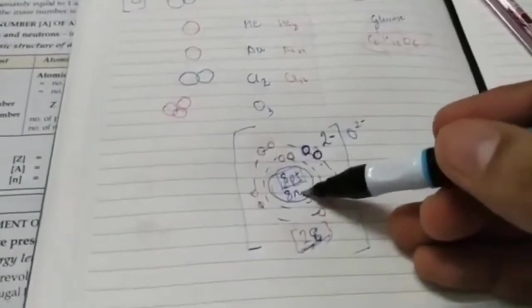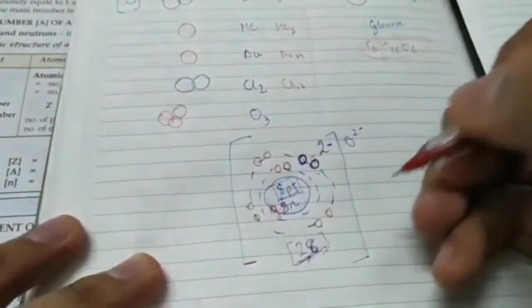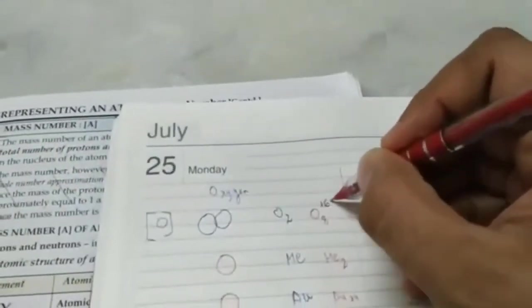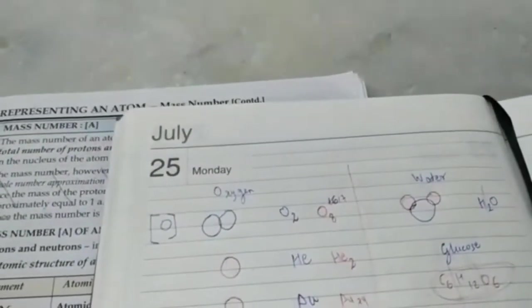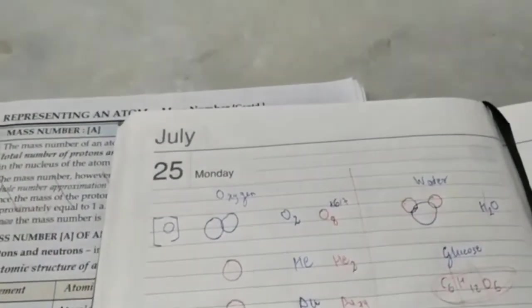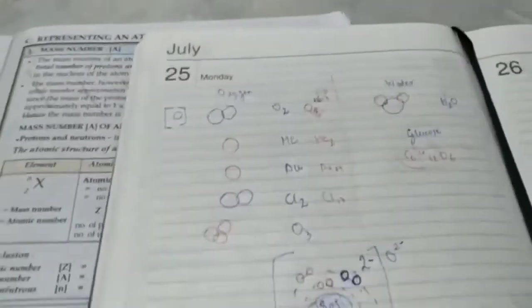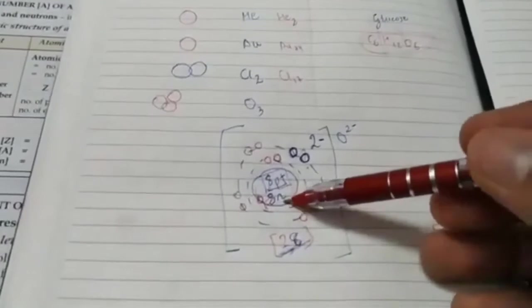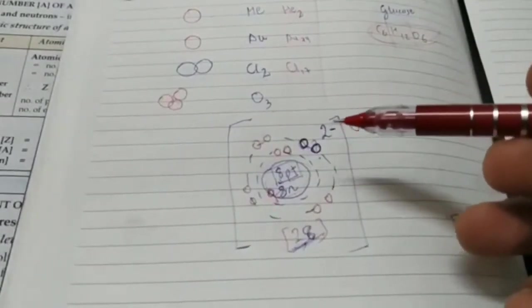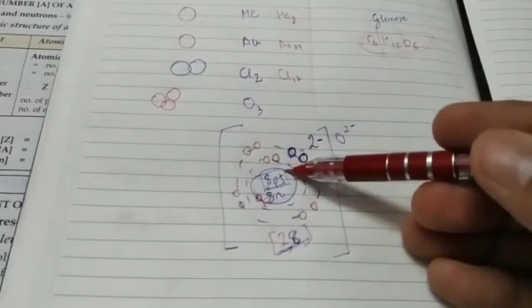But note that the number of neutrons is never fixed. It's possible that instead of 8, it has 9 neutrons. Then what would be the mass number? It would be 17. That's possible. That is called an isotope of oxygen. Although it may not be stable. Isotope means atoms of elements having the same atomic number, but different mass numbers, because they have different number of neutrons.